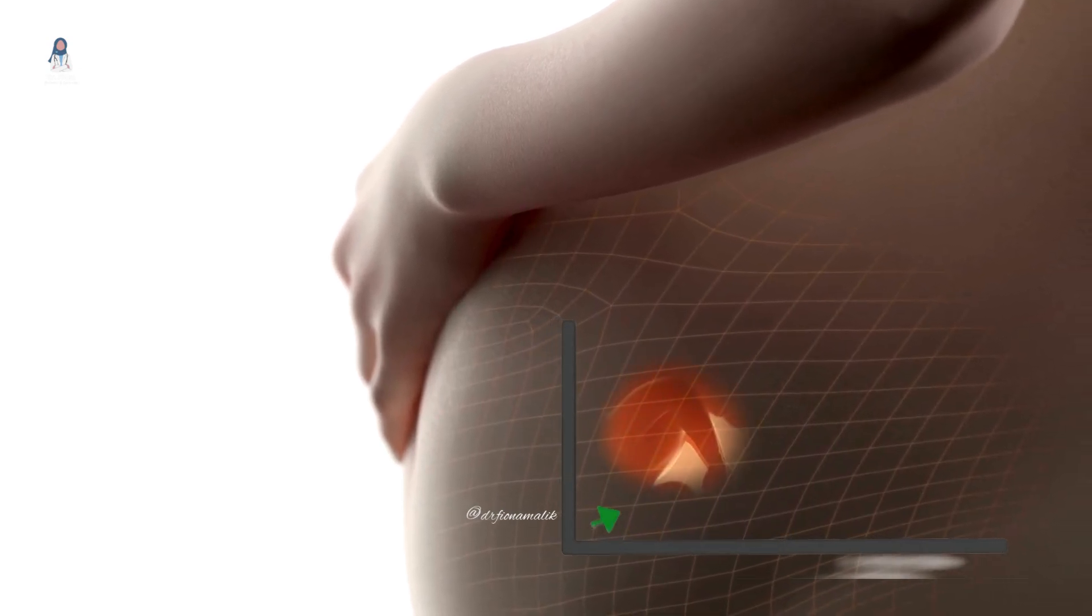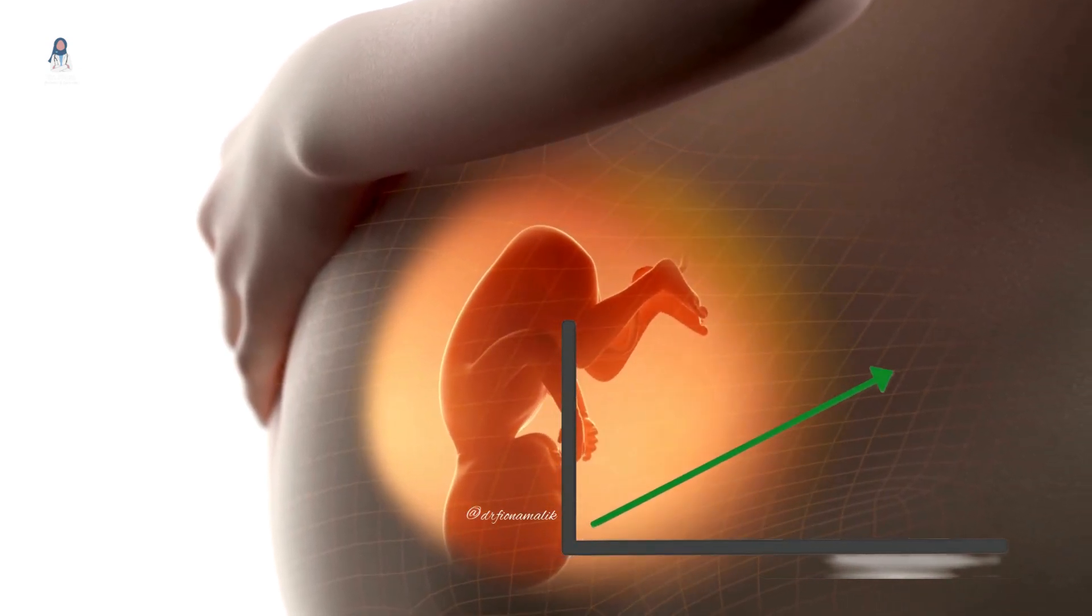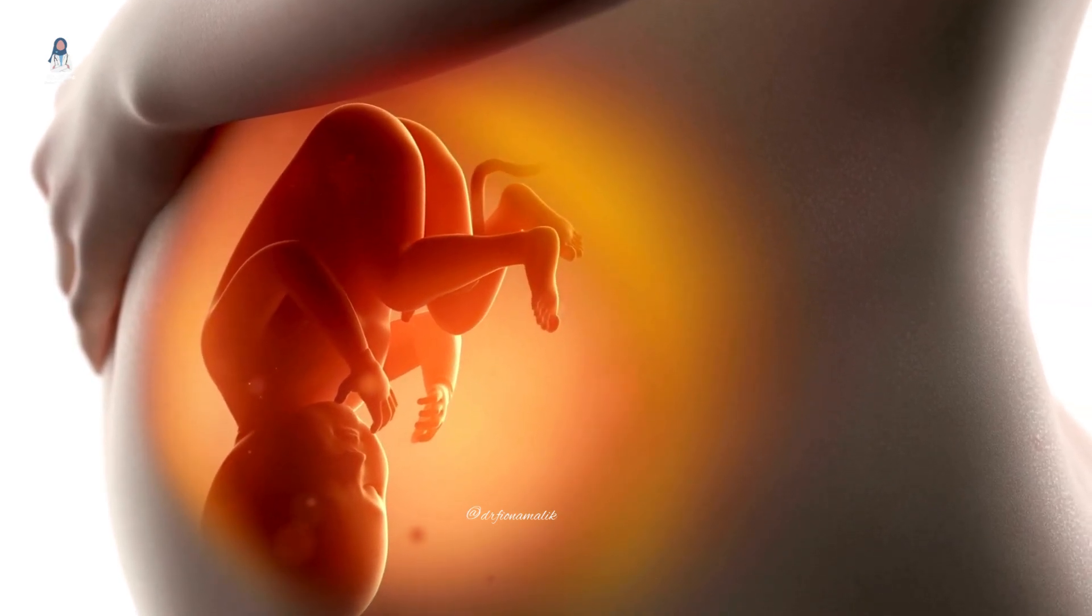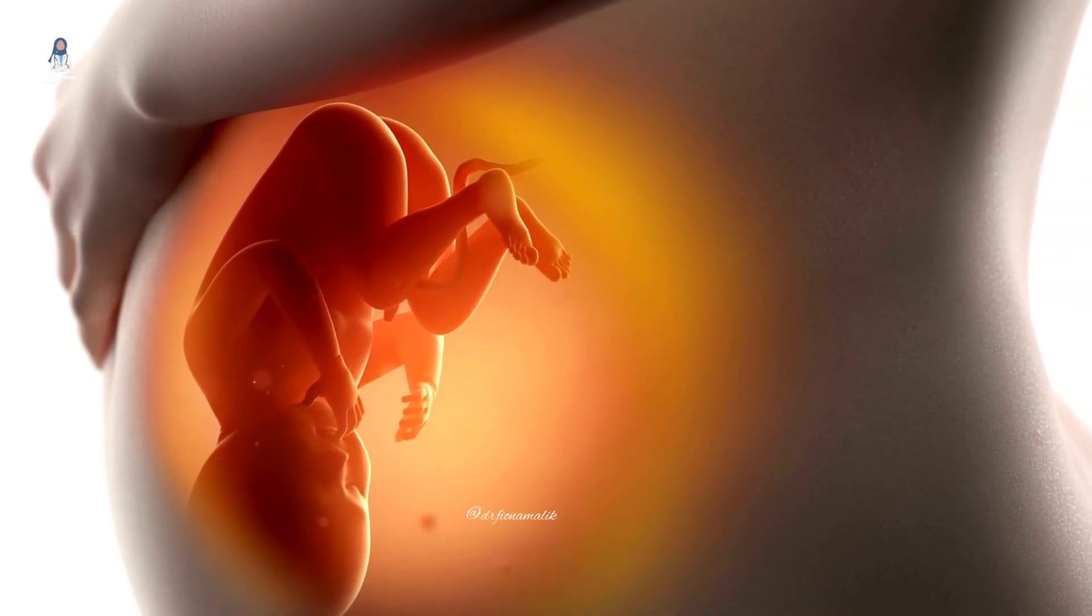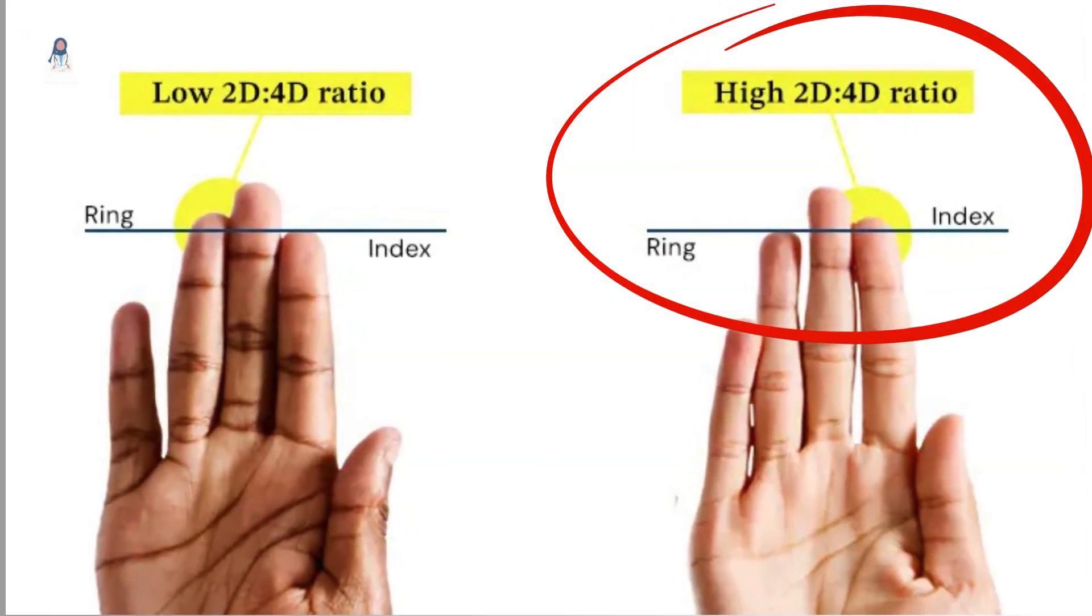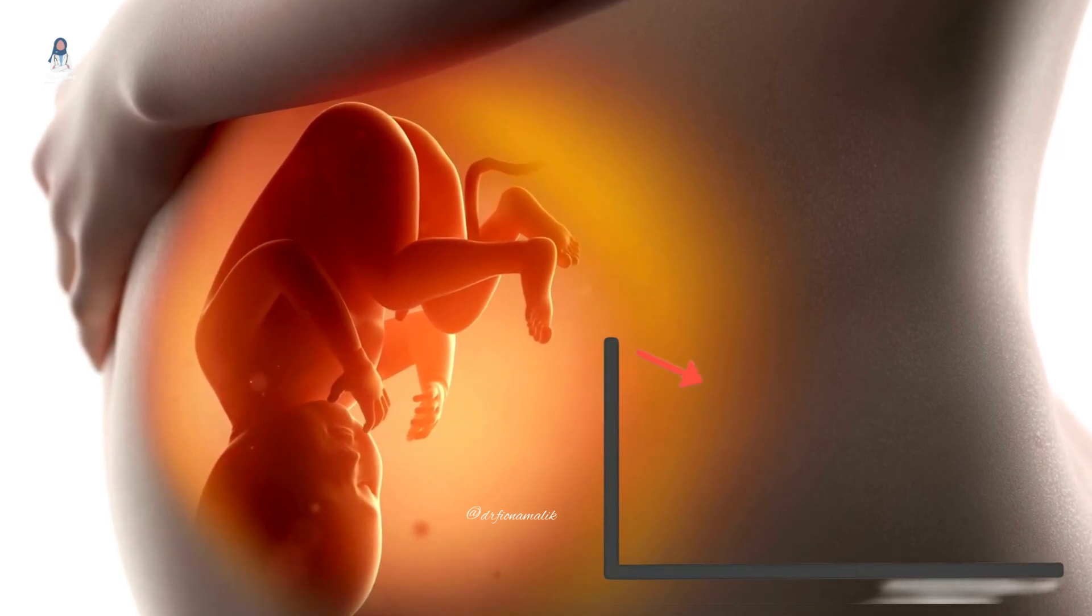That means when you were in your mother's womb, you were exposed to larger amounts of testosterone. Conversely, lower prenatal testosterone levels tend to produce a higher ratio, meaning if the ring finger is shorter than index finger that means you were exposed to low amounts of testosterone.